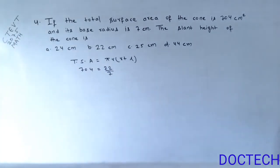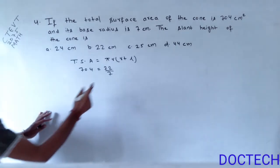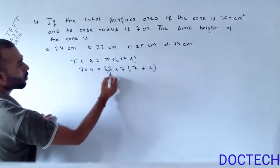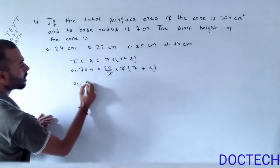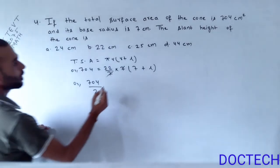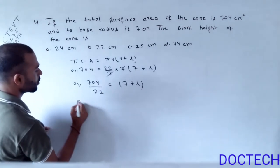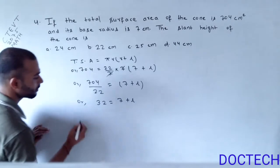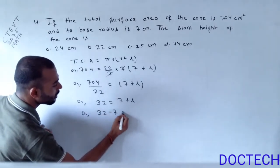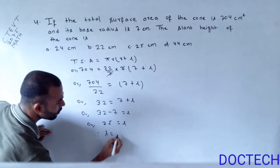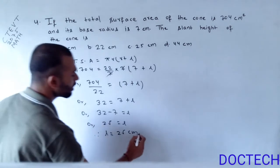The value of pi is 22 by 7, and R is 7. So, 704 equals (22/7) times 7 times (7 plus L). Simplifying, 704 divided by 22 equals 7 plus L, giving 32 equals 7 plus L. Therefore, 32 minus 7 equals L, so L equals 25 centimeters. The slant height is 25 centimeters.